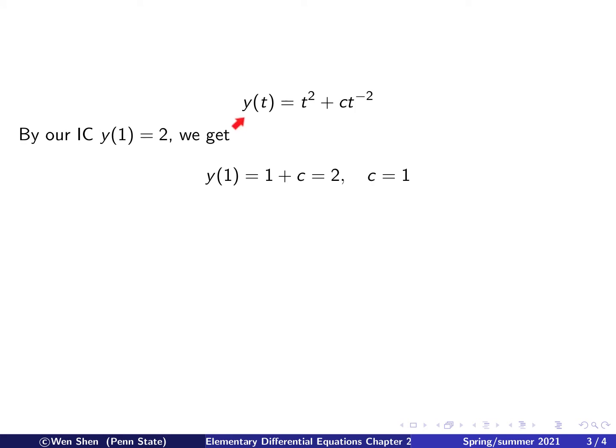So let's repeat the general solution here. And now let's plug in the initial condition, which is given as y1 equals 2. So plugging in t to be 1, we'll get 1 squared, which is 1, plus c times 1 to the negative 2, which is 1.